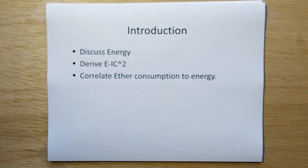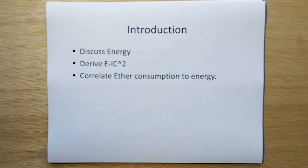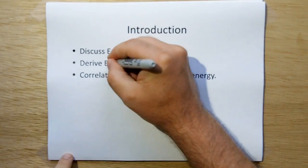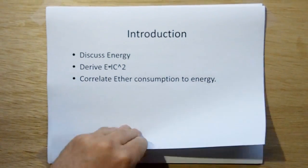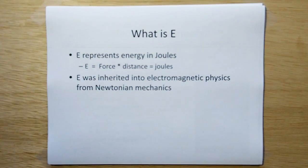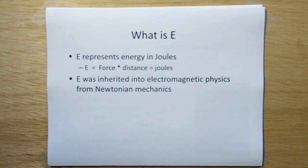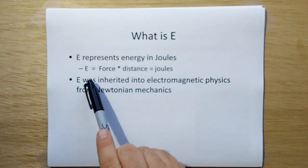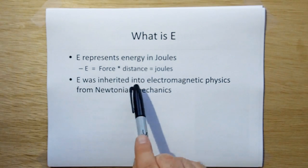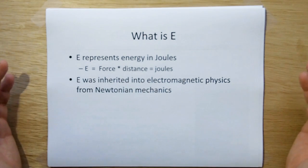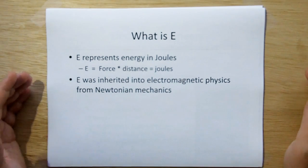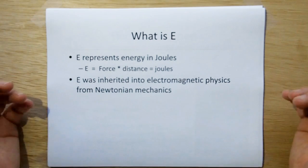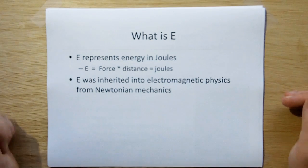In this video we're going to discuss energy. We're going to derive E equals IC squared, and we're going to correlate ether consumption to energy. So, first of all, what is E? E is the letter which represents energy in joules. Joules is defined as force times distance. The version of energy we're going to be using was inherited into electromagnetic physics from Newtonian mechanics. So electricity kind of inherited a mechanical definition of energy.